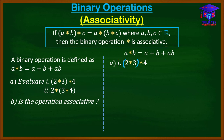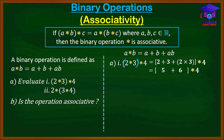Let's begin with part A(i): (2★3)★4. We solve the bracket first using the defined operation A★B = A+B+AB. Here A=2 and B=3, so we get 2+3+(2×3) = 2+3+6 = 5+6 = 11. So we now have 11★4.